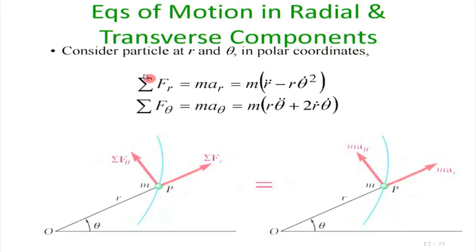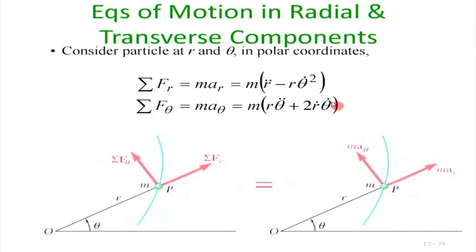In radial-transverse coordinates, the sum of forces in the radial direction = m·aᵣ = m·(r̈ - r·θ̇²), and the sum of forces in the transverse direction = m·aθ = m·(r·θ̈ + 2·ṙ·θ̇). These come directly from kinematics. Once we recognize the acceleration expressions and the corresponding forces, F = ma is applied component-wise.